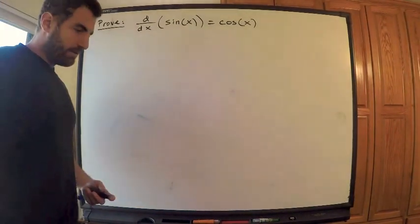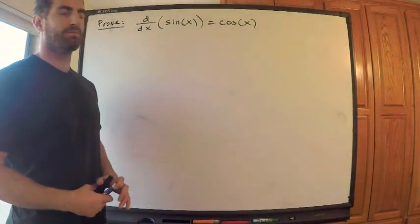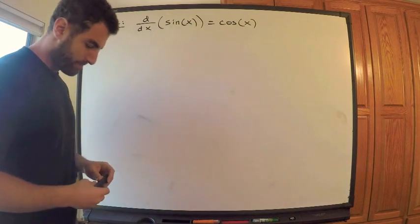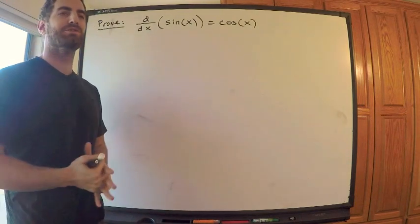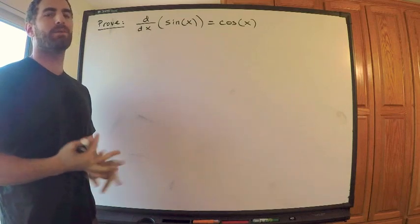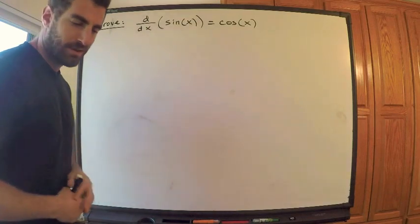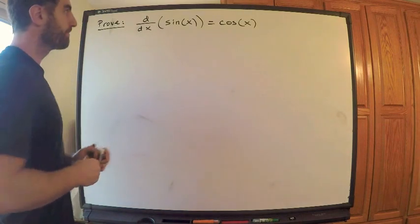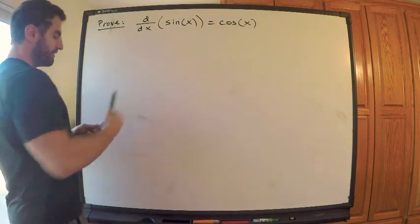Alright, quick video regarding the proof that the derivative of sine of x is equal to cosine x. I'm going to have to use a result first and then prove it — I'll make another video and prove it. That involves two special limits. I want to show this is true, so I'm just going to use the definition of the derivative.